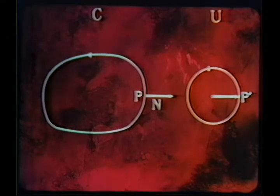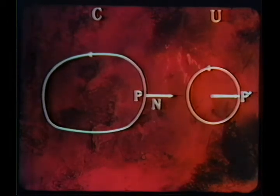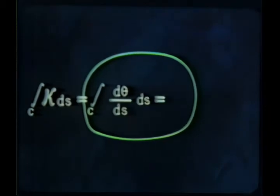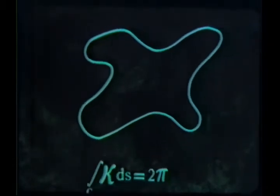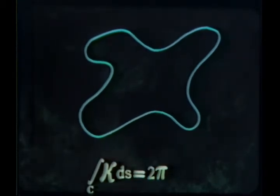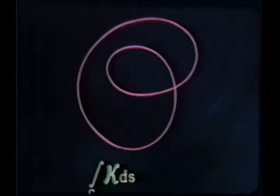Now let C be a closed curve like this. What is the integral of kappa dS around C? To get the answer, let P move smoothly around C and watch to see what happens to P prime. Since P prime traverses the circle exactly once, we see that the integral of kappa dS is equal to 2 pi. If C is any simple closed curve whatever, the result is the same: the integral of kappa dS is equal to 2 pi. If C is now like this, the integral around C is 4 pi.